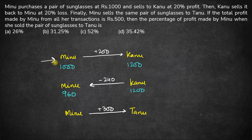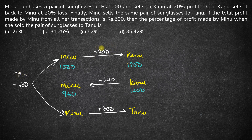Transaction one is where Minoo sells to Kanu, and transaction two is where Minoo sells to Tanu. The total profit has to be 500. If the profit in transaction one is 200, then 500 minus 200 means 300 should be the profit in transaction two. We know Minoo had purchased the glasses for 960 rupees. The question asks for the percentage profit made by Minoo when she sold the pair to Tanu.